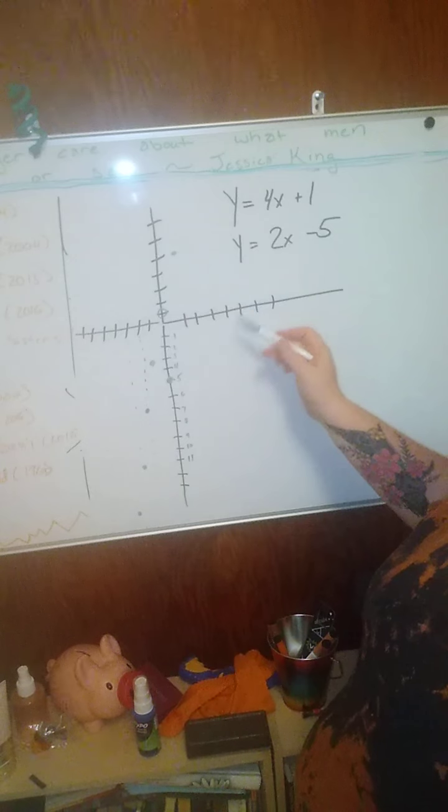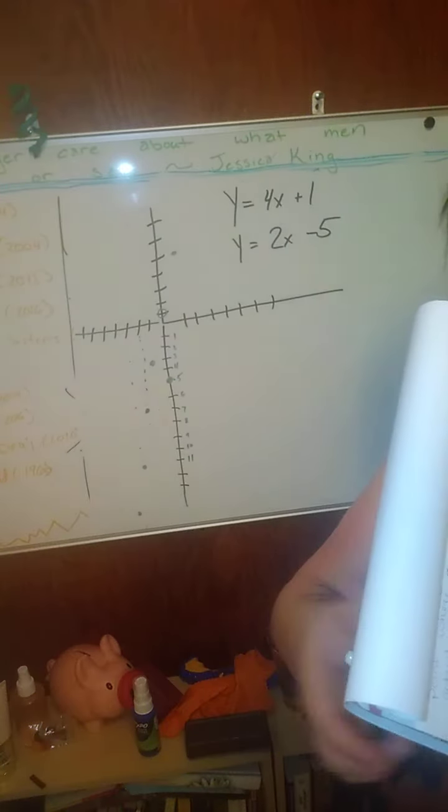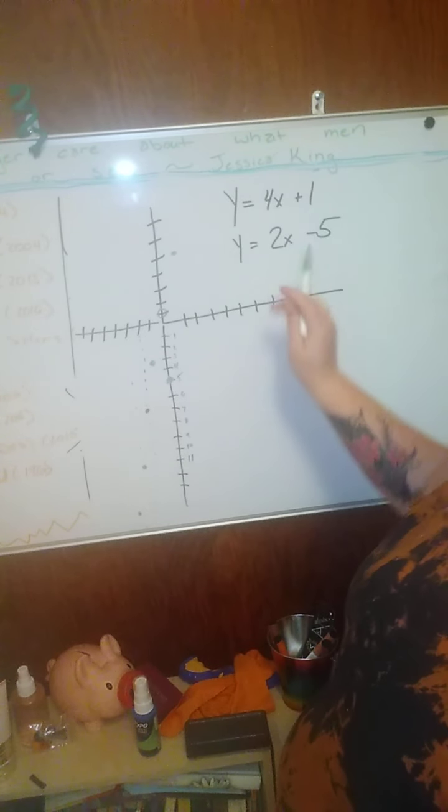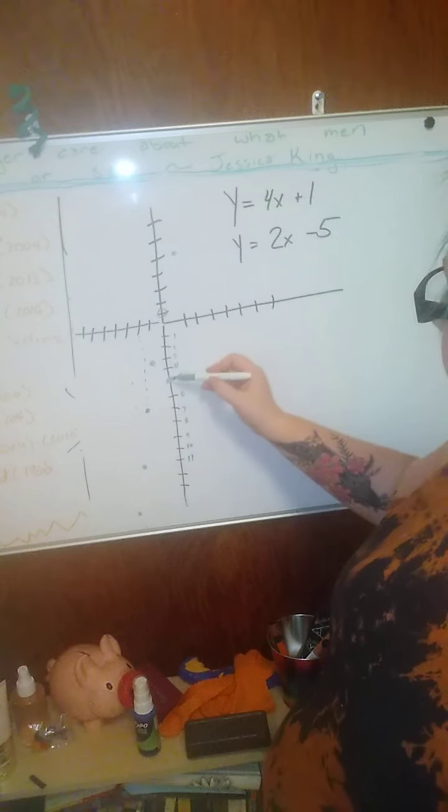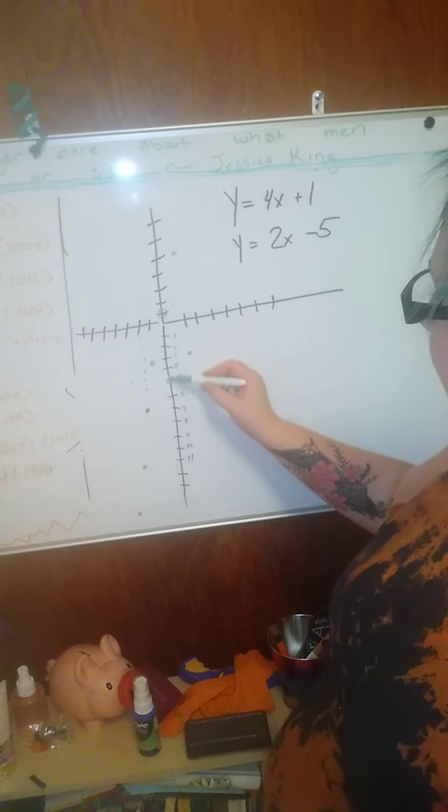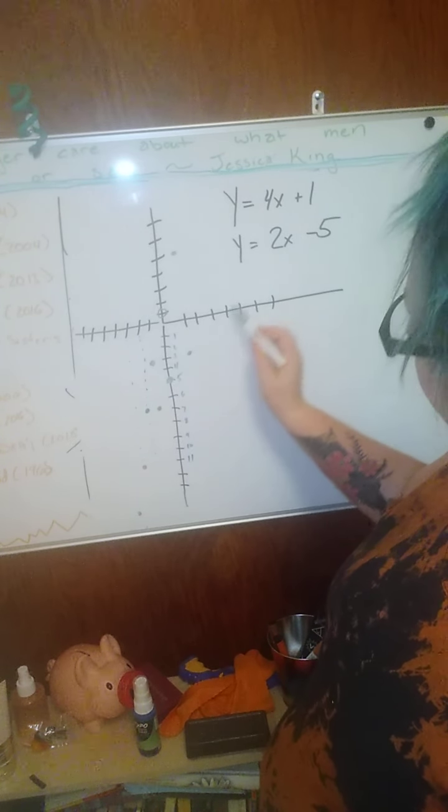This line starts at negative five. That's this one right here, starting at negative five. That's my green pen. We're going to use my green pen. Negative five line starts here. And that one we're going up two over one. Up two, one two, over one. That's the same as going down two over one in this direction. That's the line we're making with this one.